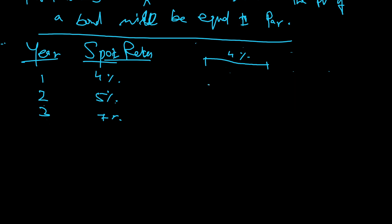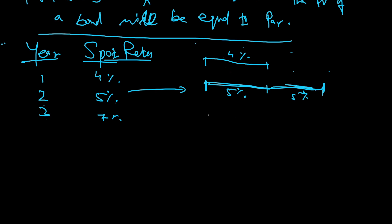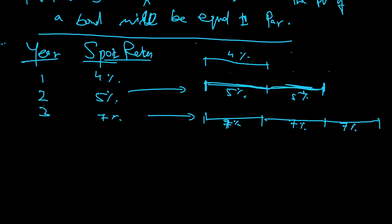The two-year spot rate is five percent and the three-year spot rate is seven percent. For example, if you are investing in a one-year bond you will get four percent. If you invest in a two-year bond, each year you are going to get five percent. For the three-year bond, each year you will get seven percent. These are spot rates — from the beginning till maturity. Now how should I find out swap par rates?